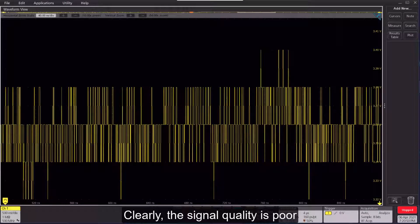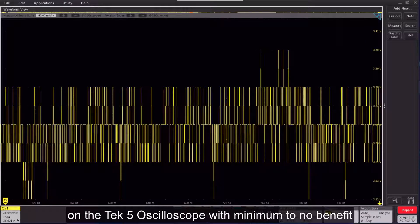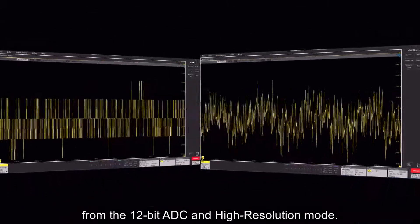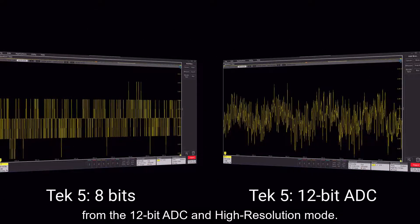Clearly, the signal quality is poor on the Tekt5 oscilloscope with minimum to no benefit from the 12-bit ADC and high resolution mode.